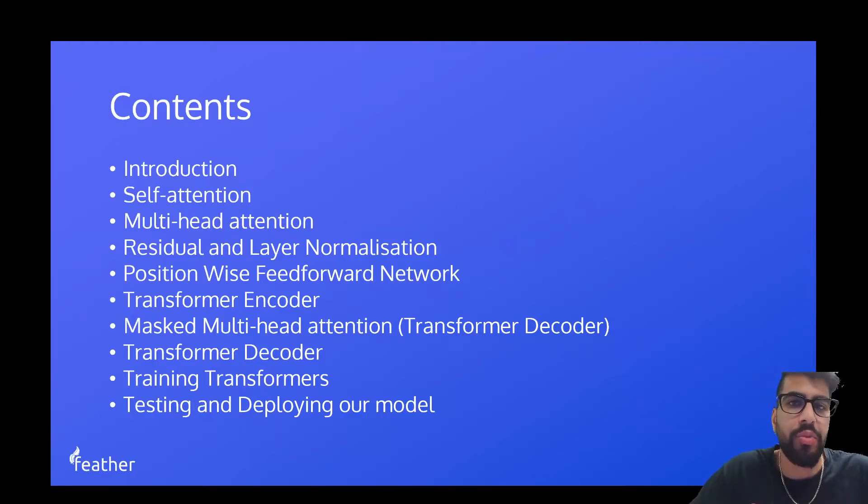We'll then look at position-wise feed-forward networks, and together that will build the transformer encoder. We'll then move on to the transformer decoder, which consists of masked multi-head attention. After plugging all the pieces together and building the decoder in its entirety, we'll look at how we can train our transformer, and we're actually going to be using a framework called PyTorch Lightning to do this.